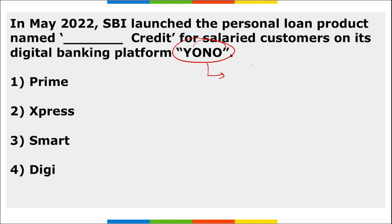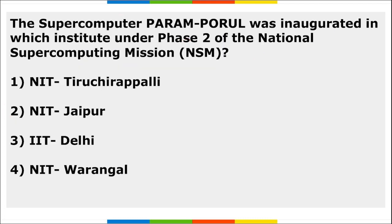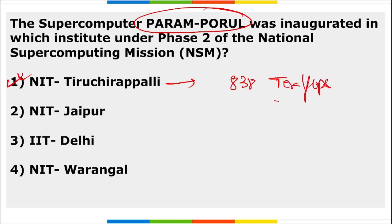SBI launched the personal loan product 'Express Credit' for salaried customers on its digital banking platform YONO. Param Porul supercomputer was set up at NIT Tiruchirappalli under the National Supercomputing Mission. It has a speed of 838 teraflops — measured in FLOPS (Floating Operations Per Second) — and cost approximately ₹19 crore to build.